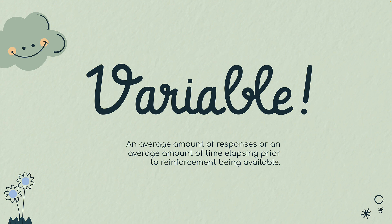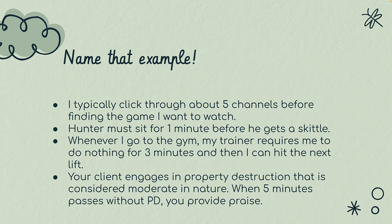Let's look at a few examples. I'll read it and give about a five-second pause — if you need more, you can pause your screen. 'I typically click through about five channels before finding a game I want to watch.' That's going to be a variable ratio. The reinforcement is finding the game, the behavior is clicking through channels. The word 'about' tells me it's variable, and 'five channels' tells me it's ratio.